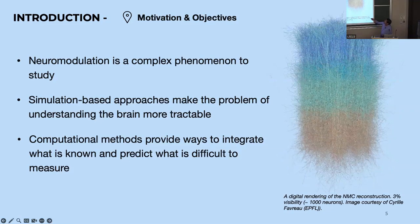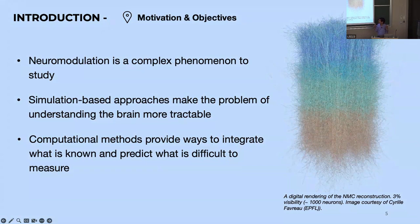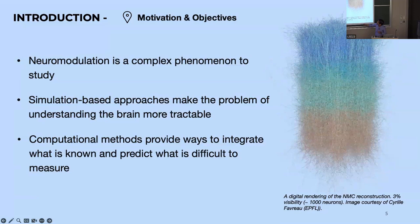How can we use this approach of going from sparse to dense to understand a process that is as complex as neuromodulation? Neuromodulation is a very complex phenomenon to study in the brain, as Kenji and many others in the audience would attest. Simulation-based approaches try and make the problem of understanding the brain more tractable, and computational methods provide ways to integrate what is known and to predict what is difficult to measure. Building detailed computational models could provide ways to integrate the known knowns and predict the known unknowns in some part of the brain.